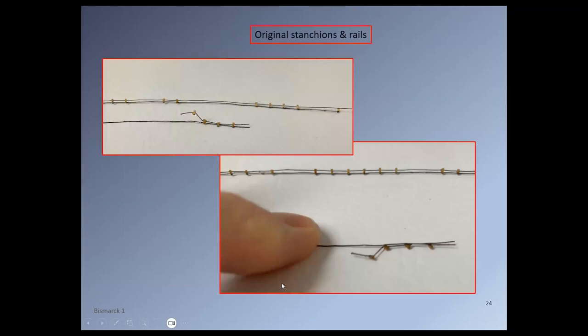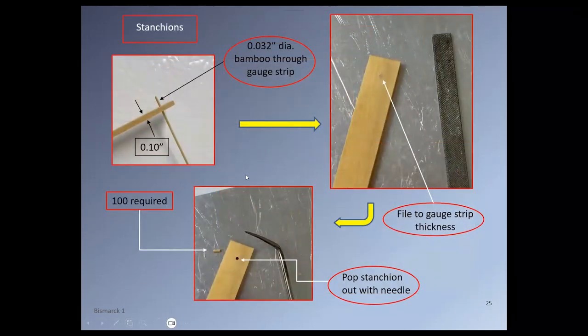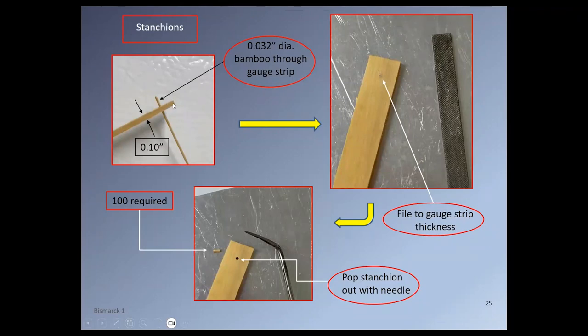Now the main rail was originally made from cotton thread mounted on 30-thousandths-diameter stanchions, but the thread was so badly perished that I decided to replace the whole lot. This one shows you how I made the stanchions all together. Here's a piece of de gamay wood, a tenth of an inch thick, and I drilled a hole through it and drove a piece of bamboo of 32-thousandths diameter through the gauge strip. Clipped off the bamboo, put it hard down on this sheet of aluminum, and then using a file, filed it down to the same thickness of this gauge strip. And then using this needle, I could pop out the stanchions. I needed 100 of these altogether.